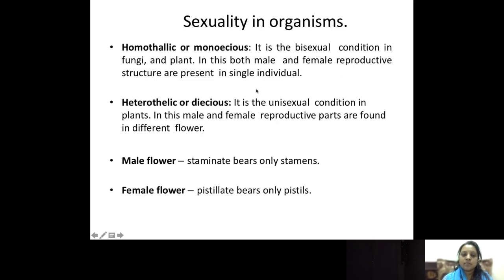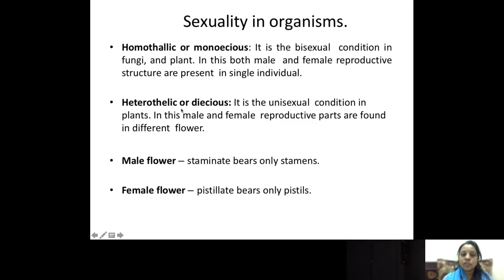Coming to sexuality in organisms: homothallic or monoecious is a bisexual condition in fungi and plants. In this, both male and female reproductive structures are present in a single individual — for example, the stamen and pistil are found in the same plant. We call this condition homothallic or monoecious. To repeat: homothallic or monoecious is a bisexual condition, meaning both male and female are present in one single individual.